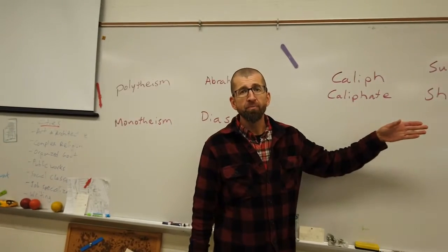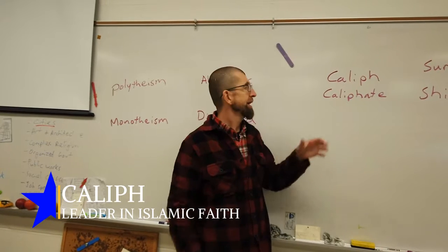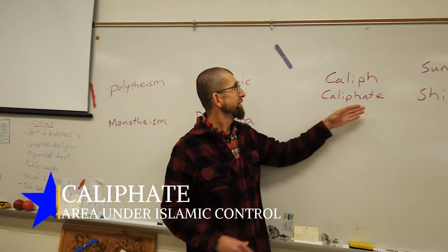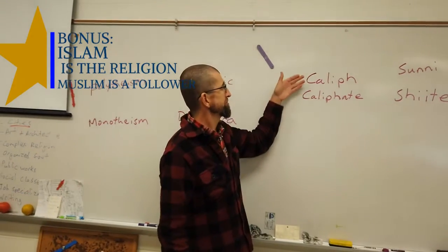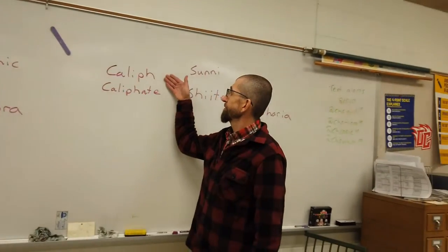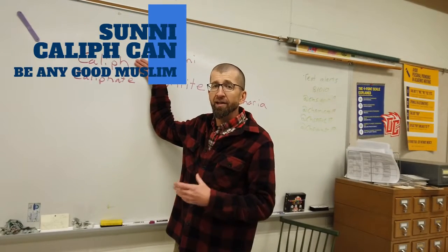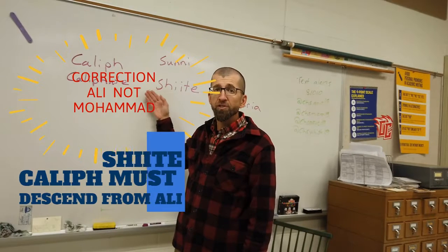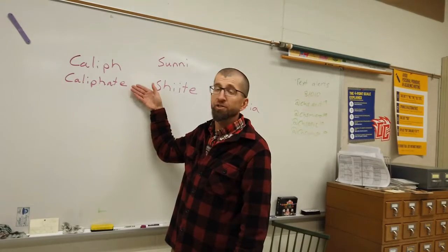The terms that relate specifically to Islam would be caliph, which is the leader of the Islamic religion. The caliph is a person who is in charge of the area known as the caliphate. In Sunni Islam, they believe that any good, devout Muslim could be the caliph. That is a major split in Islam between Sunnis and Shiites. With Sunnis, they believe that any person who is rightly guided can be a caliph. With Shiites, the belief is that you must be a direct descendant of the Prophet Muhammad in order to be the caliph and be in charge of the caliphate.